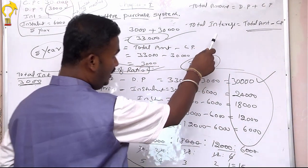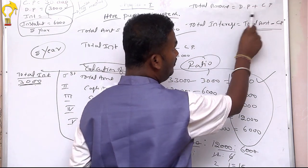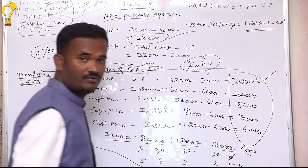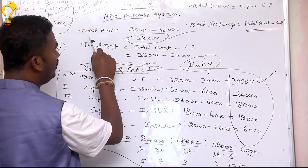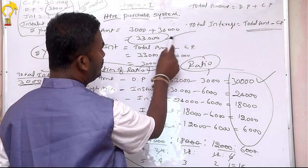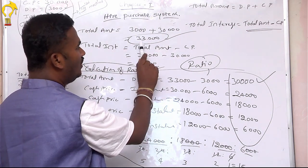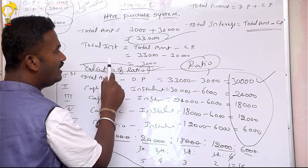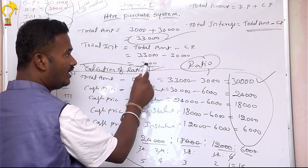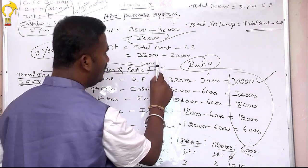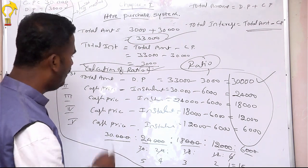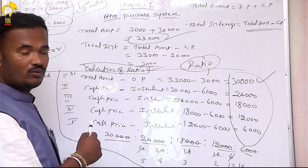Now we need total amount and total interest. In total amount, total amount and total interest is $4 plus — that is the total amount. Capital is $40, and cash pay total is $40. Total amount minus cash pay — total amount $40.